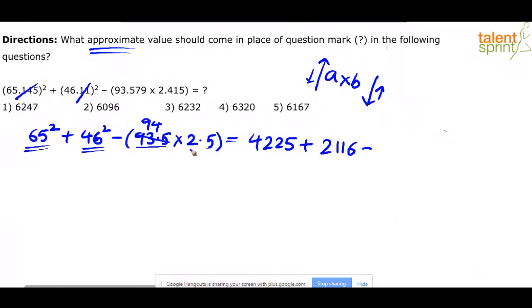For example, 93.5 into 2 will be 187 and half of 93.5 is approximately 47. So 187 plus 47, 234 will be the value, 93.5 into 2.5. Approximately I can say 234 without even taking it as 94. Forget about 94.